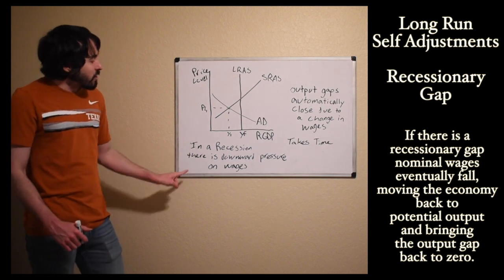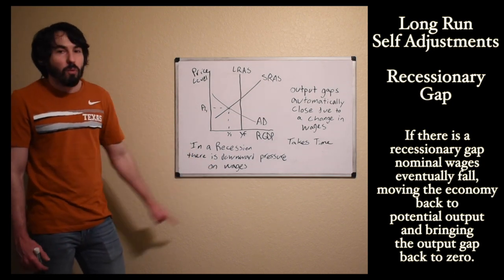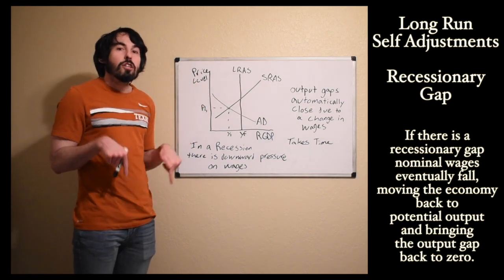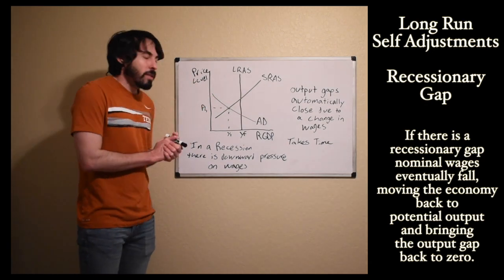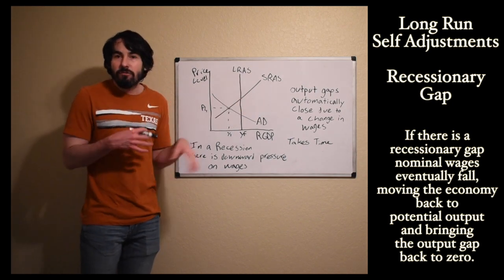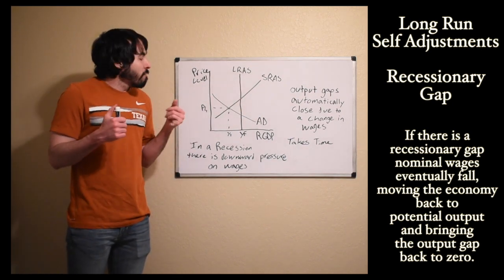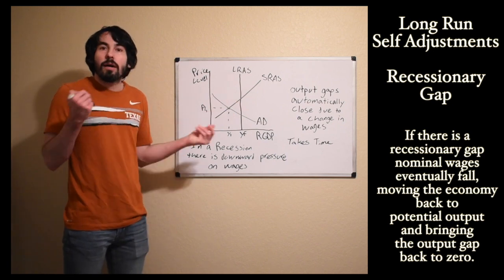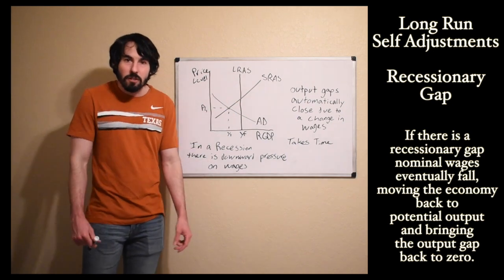So let's say we've fallen into a recession. In a recession, there is going to be downward pressure on wages, and what I mean by that is there's going to be pressure for people to accept lower wages. When we go into a recession, let's say that I used to work up here in full employment output. We were in long run equilibrium, full employment output. I worked at HEB and I made $12 an hour.